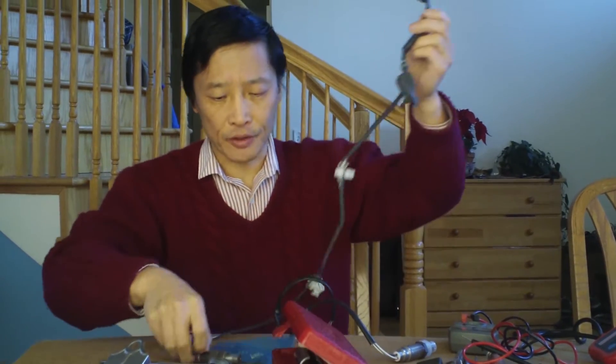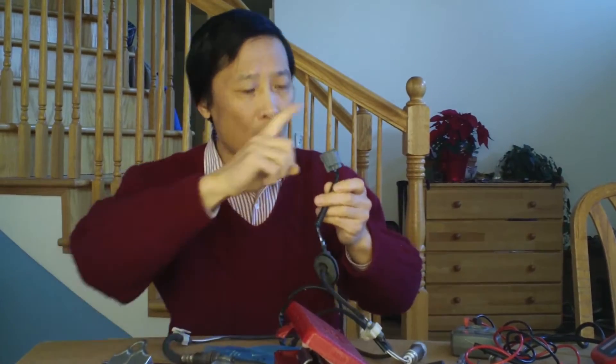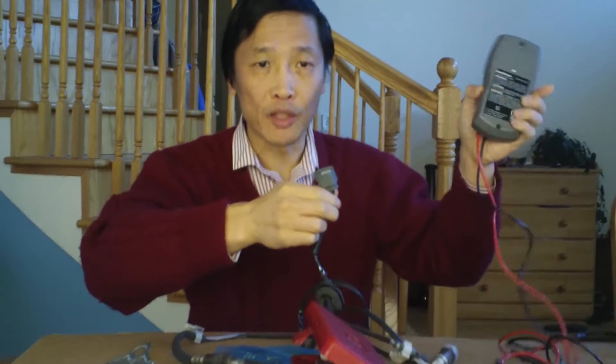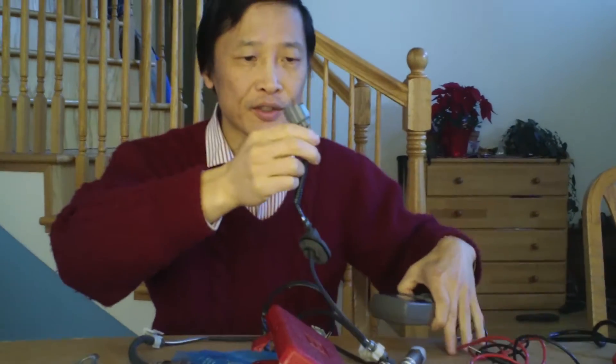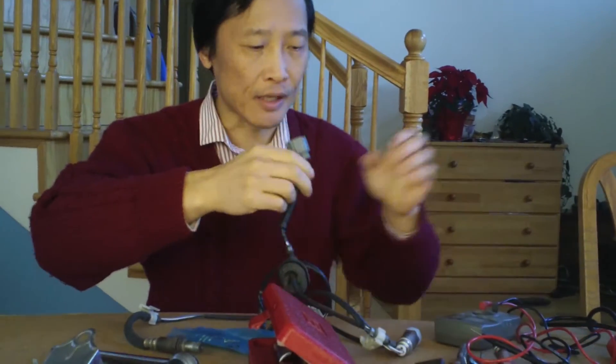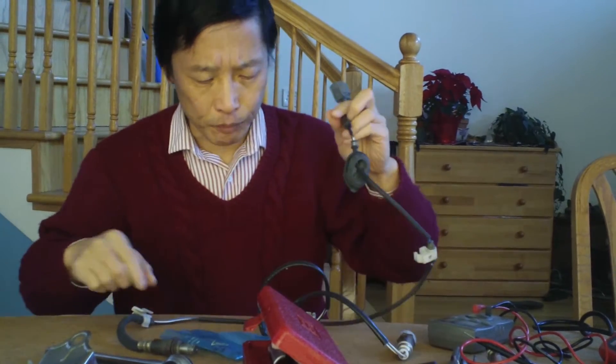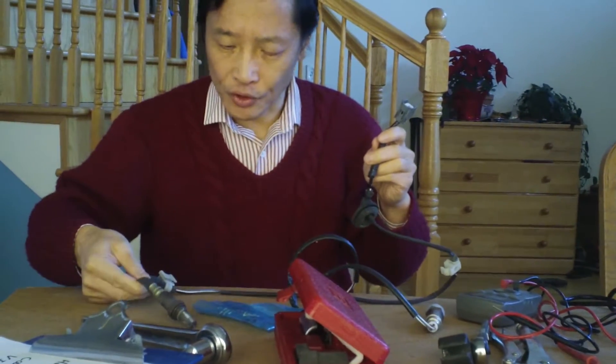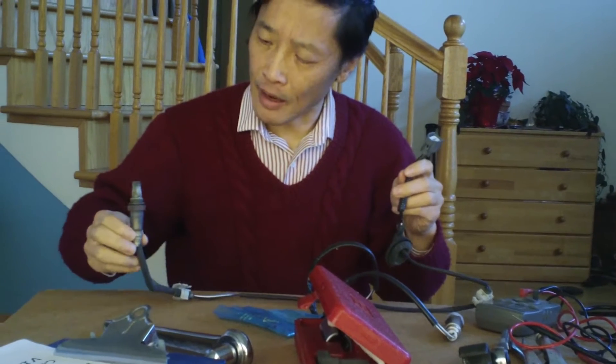So this is the oxygen sensor, it's pretty long, and there are four wires here. I use the multimeter to measure the resistance of the heater. It's around 6 ohms, it's probably okay. So I put it back, but still the engine light came on.